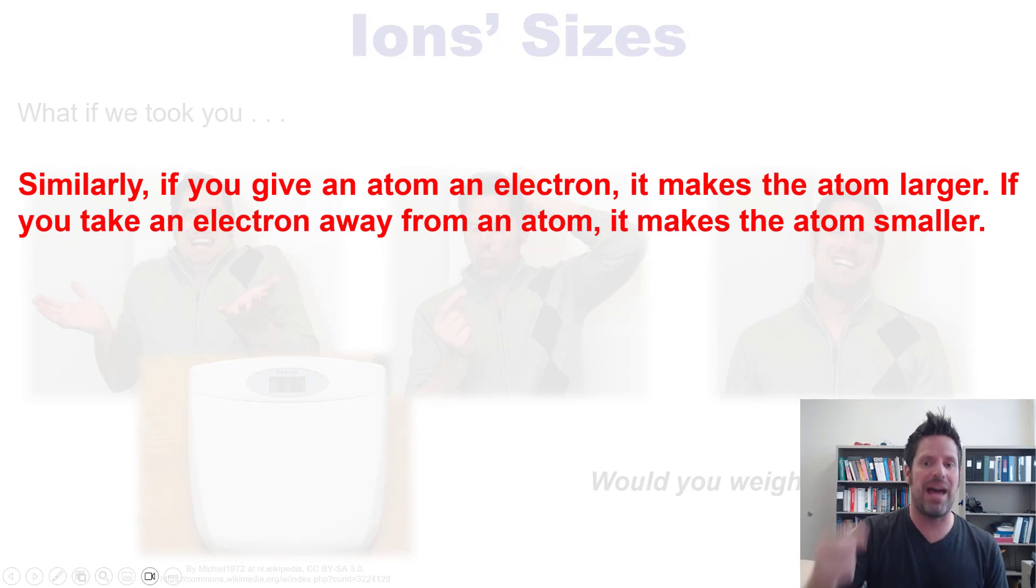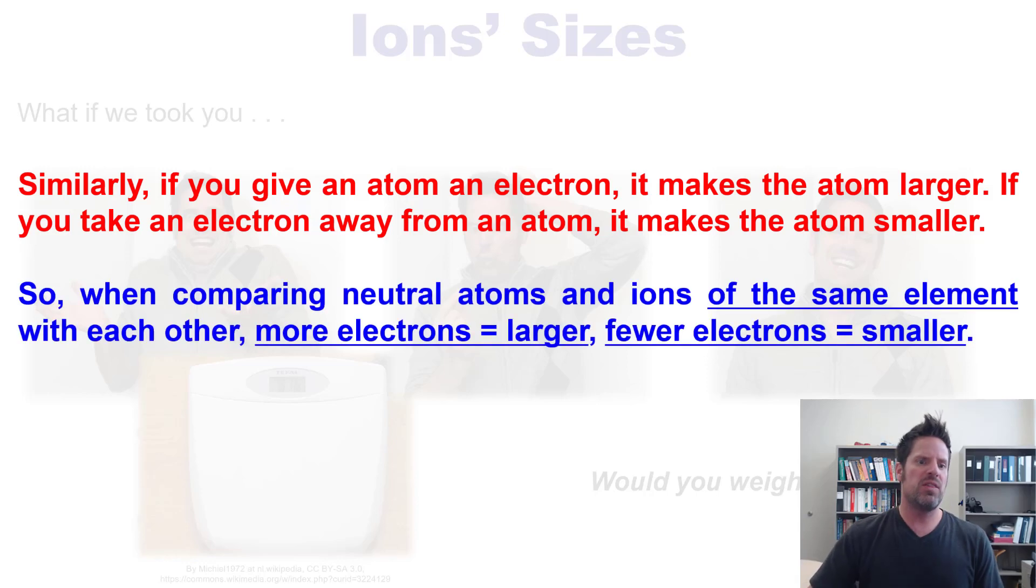Similarly, if you give an atom an electron, it makes that atom a little bit larger. And if you take an electron away from an atom, it makes the atom smaller. Thus, when comparing neutral atoms and ions of the same element with each other, more electrons equals larger and fewer electrons equals smaller.